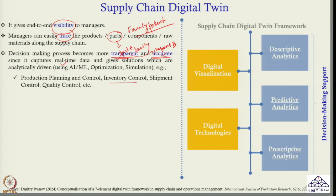Digital twin also helps with inventory control. For example, with two DCs and three products, I need to find out at which DC how much quantity of product A, B and C should be stored so that overall cost is minimized. The costs involved are cost of overstocking and cost of understocking. A digital twin helps me decide inventory levels at the factory, at the DC and at customer locations, so that the overall cost of both overstocking and understocking is minimized at each location.